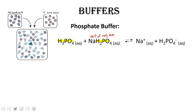Notice that what we have here is an aqueous solution that contains acid molecules and conjugate base molecules in solution. The sodium ions are floating around in solution, but they do not play any role in the buffer itself. So we've got acid and conjugate base in our solution, just like we have in our schematic.